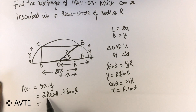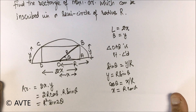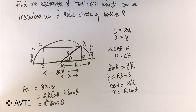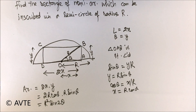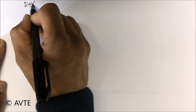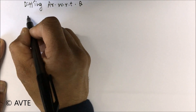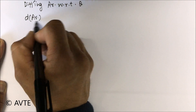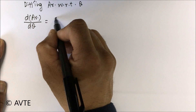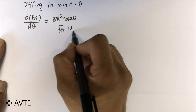Taking R squared as a constant, we use the identity 2 sine theta cos theta equals sine 2 theta. So the area function simplifies to R squared times sine 2 theta. This function needs to be maximized, so we differentiate area with respect to theta.